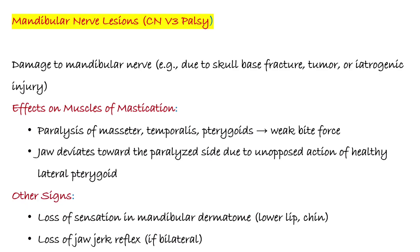Mandibular nerve lesions: damage to the mandibular nerve due to skull base fracture, tumor, or iatrogenic injury affects the muscles of mastication. There is paralysis of the masseter, temporalis, and pterygoids, causing weak bite force. The jaw deviates towards the paralyzed side due to the unopposed action of the healthy lateral pterygoid. Other signs include loss of sensation in mandibular dermatomes like the lower lip and chin, loss of the jaw-jerk reflex, and if bilateral involvement of mandibular nerve lesions occurs, more extensive deficits result.